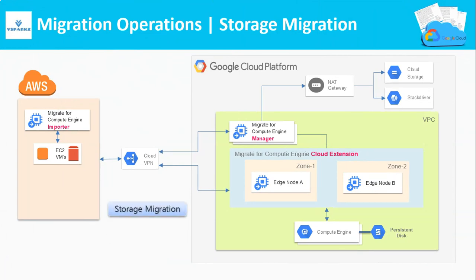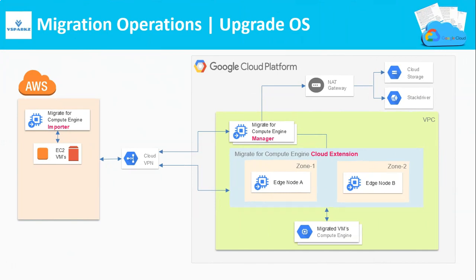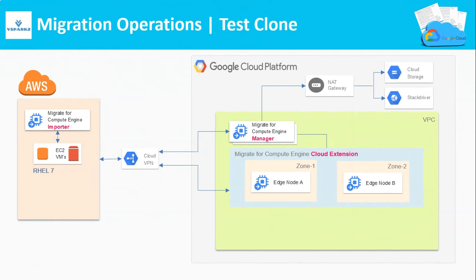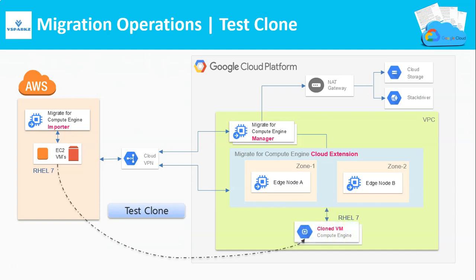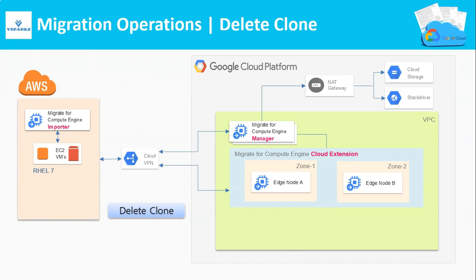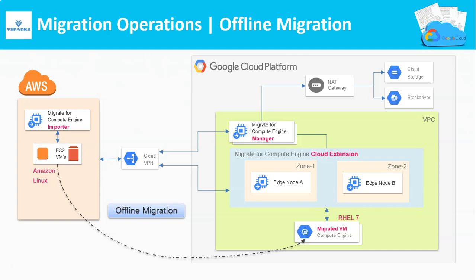Storage migration copies only the source VM storage data into a disk on the Compute Engine. In the test clone operation, Migrate for Compute Engine clones the VM from the source platform and then moves the cloned VMs as Compute Engine VMs for testing. In this scenario, the source VM is not removed or deleted, and any changes made to the data in the test clone are not replicated back to your live source systems. Deleting the test clone removes it from Google Cloud. With an offline migration operation, Migrate for Compute Engine enables you to migrate workloads running with operating systems that are not supported by Migrate for Compute Engine's streaming technology.